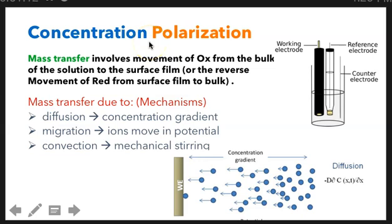Now, if it's concentration polarization, one example is concentration polarization is due to mass transfer or slow mass transfer. It involves the movement of oxidized species from the bulk of the solution to the surface film, or the reverse - movement of reduced species from the bulk of the solution to the surface film. The mass transfer can be due to diffusion, migration, and convection. So I will focus on diffusion.